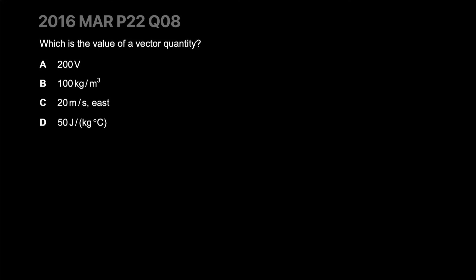What is the value of a vector quantity? This is voltage, which we haven't studied. This is density, which doesn't really have any direction - it's a directionless quantity. Speed could have been velocity, but they've added the direction so it's more like a scalar quantity at this point. That's your answer.